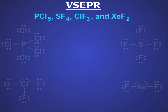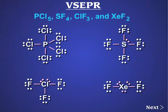Consider the Lewis structures of phosphorus pentachloride (PCl5), sulfur tetrafluoride (SF4), chlorine trifluoride (ClF3), and xenon difluoride (XeF2). Counting the number of VSEPR pairs of electrons around the central atom of each molecule, we find five VSEPR pairs. Don't forget to count lone pairs.